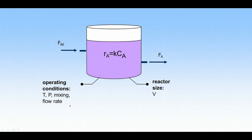We know that chemical reactors are vessels in which chemical reactions take place. The goal of chemical reaction engineering is to determine the relationship between the reaction rate, kinetics, the necessary reactor size, and the selected operating conditions.